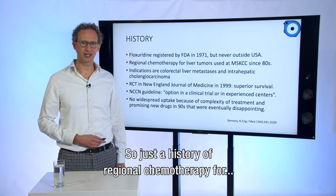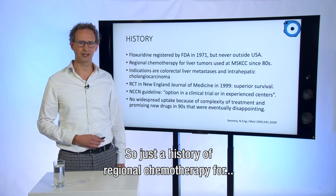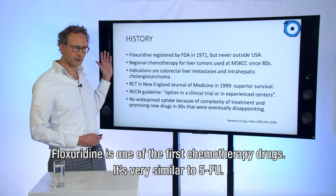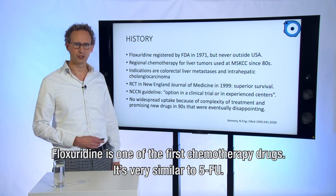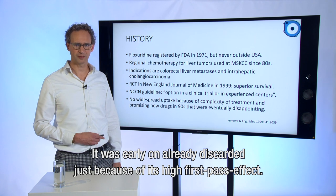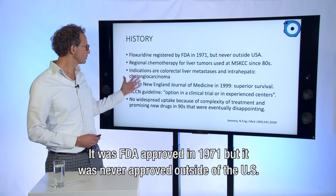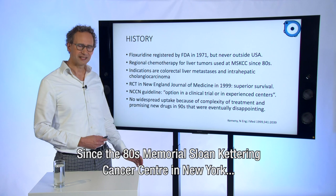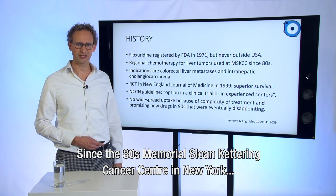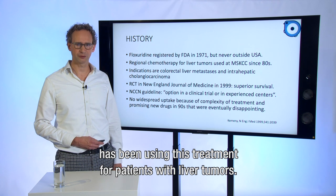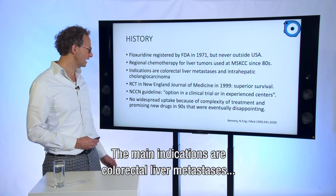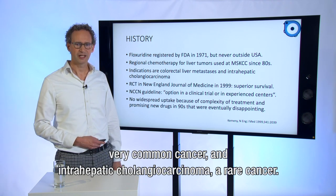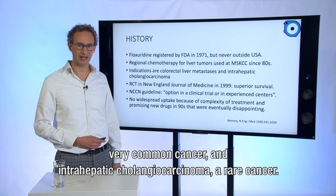The history of regional chemotherapy for liver tumors is quite unusual. Floxuridin is one of the first chemotherapeutic drugs — it's very similar to 5-FU — but it was early on already discarded because of its high first-pass effect. It was FDA approved in 1971 but was never approved outside the US. Since the 1980s, Memorial Sloan Kettering Cancer Center in New York has been using this treatment for patients with liver tumors. The main indications are colorectal liver metastasis, a very common cancer, and intrahepatic cholangiocarcinoma, a rare cancer.